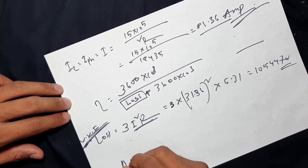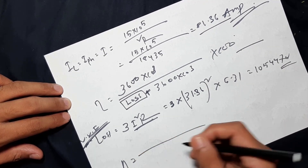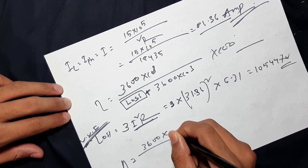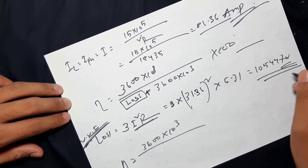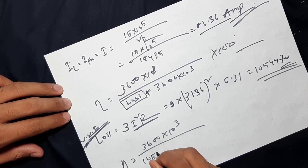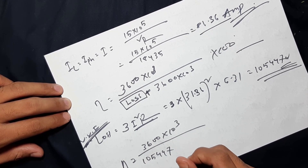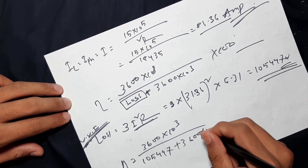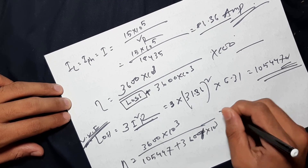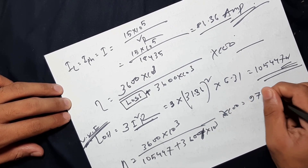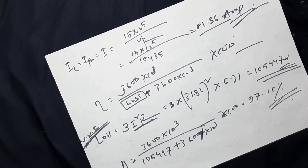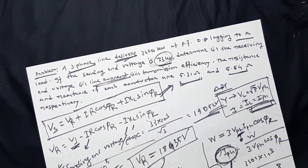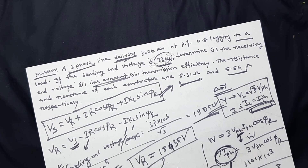So efficiency = 36,000 × 10³ divided by (loss + power delivered) = 36,000 × 10³ divided by (105447 + 36,000 × 10³). The answer is 97.15 percent. If you look at the line and phase current equation for the star connection, then you can easily solve the problem. Okay, so next time, thank you.